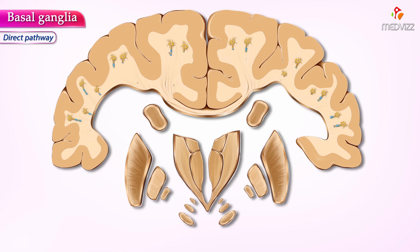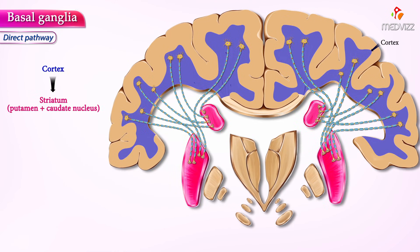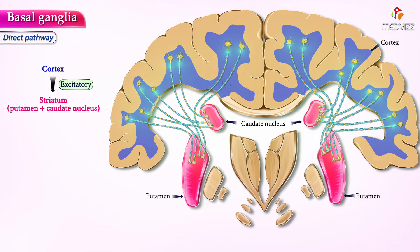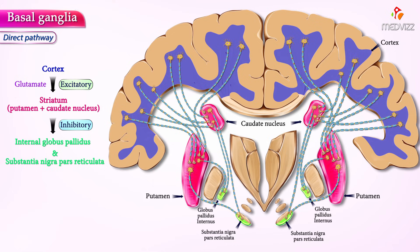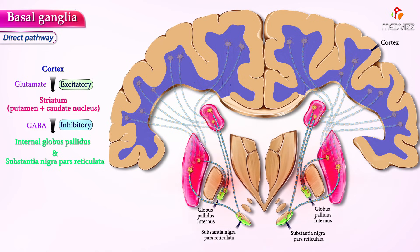The direct pathway starts from the cortex to the striatum. The striatum is comprised of the caudate nucleus and putamen. This pathway from the cortex to the striatum is excitatory — the neurons of the striatum are activated by input signals from the cortex via the neurotransmitter glutamate. These activated neurons in the striatum are inhibitory neurons that use gamma-aminobutyric acid (GABA) as their main inhibitory neurotransmitter. The axons from the striatum then reach the globus pallidus internus and substantia nigra pars reticulata, making this segment of the pathway inhibitory.